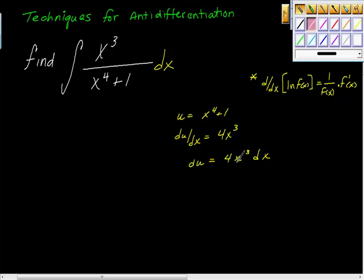Then what I'm going to do here is multiply both sides by one fourth. The reason I'm doing that is I'd like to get this piece, x cubed dx, replaced. So multiply both by one fourth, so we have du over four is equal to x cubed dx.